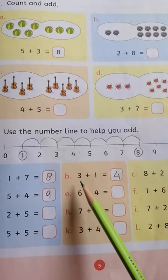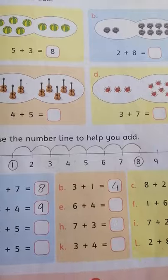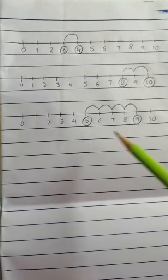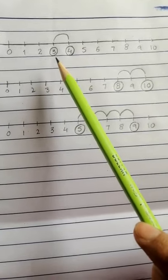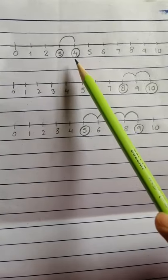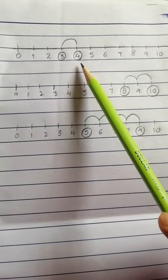Okay in part B you can see there is 3 plus 1. First of all students make a number line on rough page. And you can see here we start with 3 and here is only 1 jump. So we get 4. Our answer is 4.